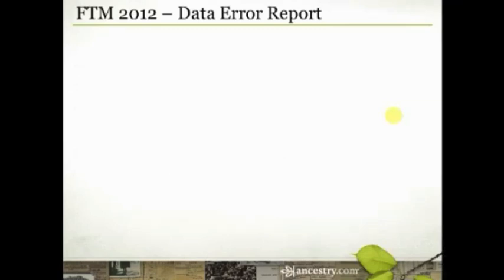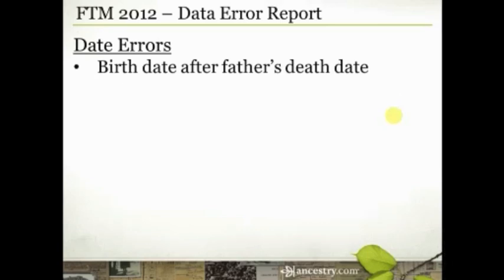Those are the person errors. Then we have a whole series of date errors we can check for. First: anybody where the birth date is after the father's death date. Sometimes this is legitimate — if the mother was pregnant when the father died, the child will have a birth date after the father's death. But this allows you to check that list and say: was this child born more than nine months after the father's death? Maybe I have this child attached to the incorrect father, or I have the father's death date or the child's birth date incorrect.